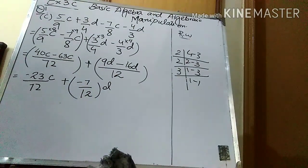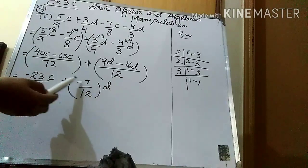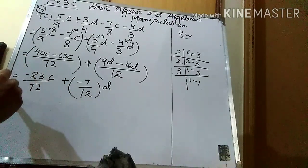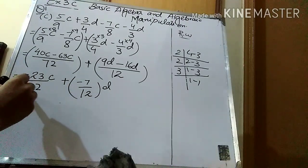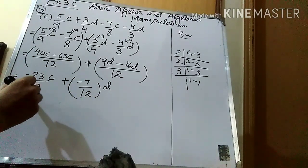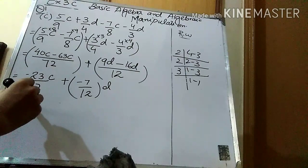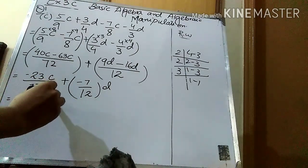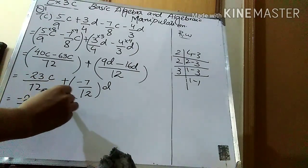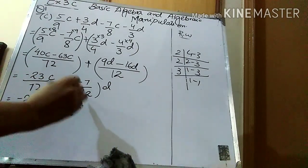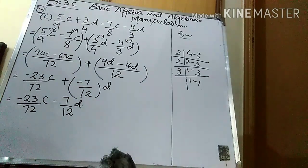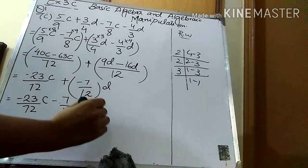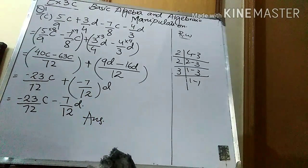Here you can see two signs coming together, so I multiply them. The final answer is −23/72c − 7/12d. I hope that this is clear to you.